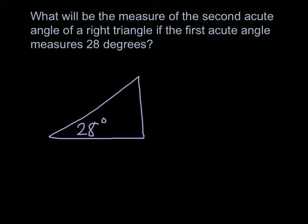This question is asking: what will be the measure of the second acute angle of a right triangle if the first acute angle measures 28 degrees? And here's our triangle.